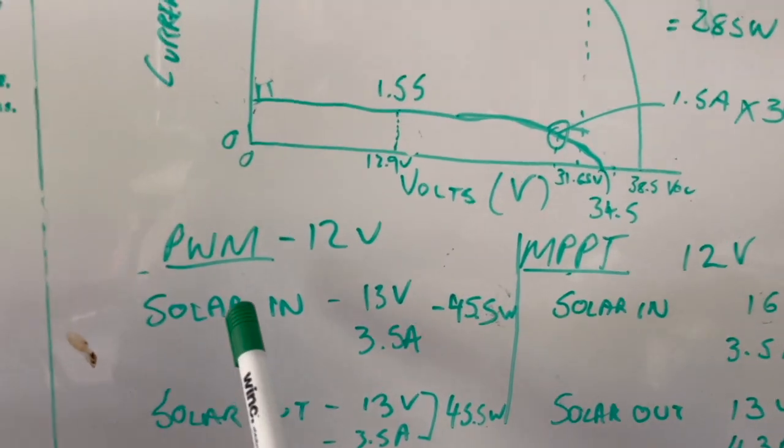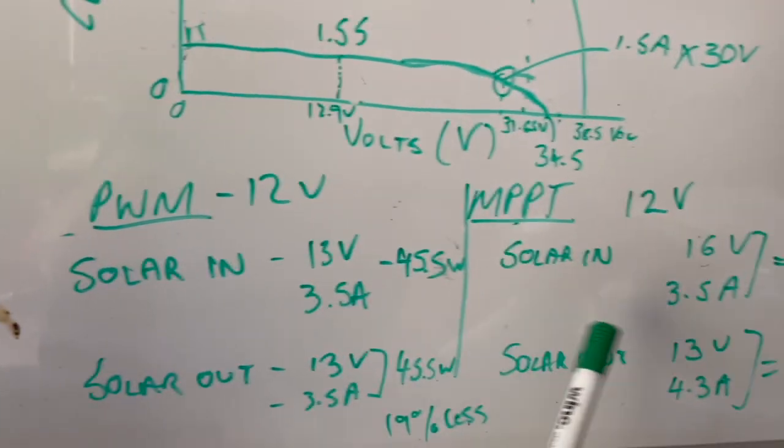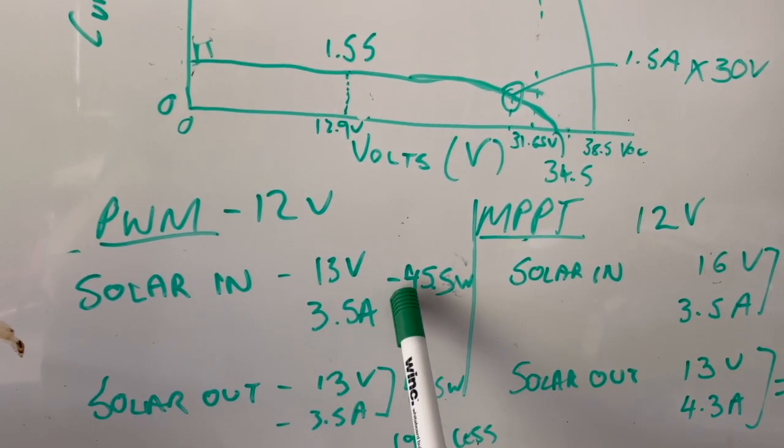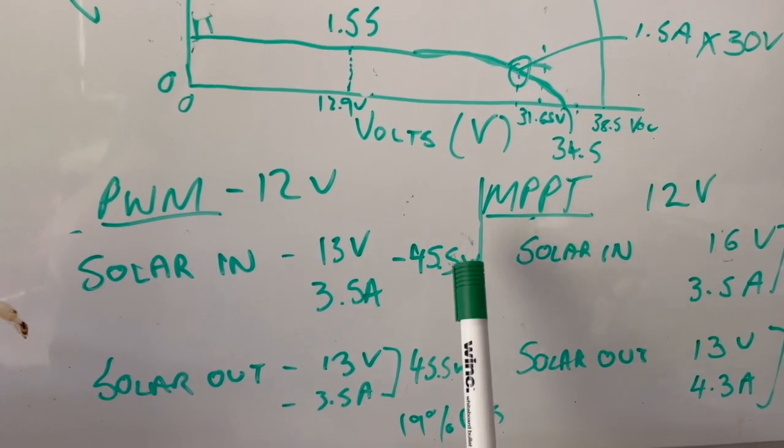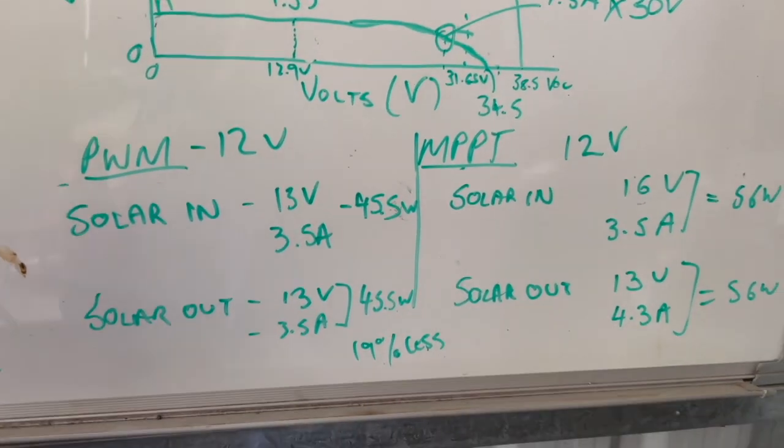If you have a look at a PWM, we've got 13 volts coming in. It hasn't changed. That 3.5 amps gives us 45.5 watts in and out, so it's 90 percent of the MPPT. It's a much closer gap than with the larger panels.